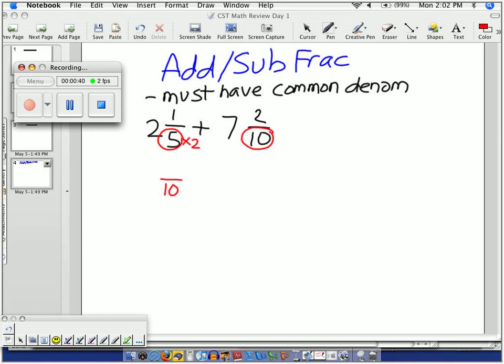But in order to do that, I multiply it by 2, same thing up top there. So this is now 2 and 2 tenths plus 7 and 2 tenths. Don't forget, whenever you change the bottom, you must also change the top. That's how we ended up with 2 tenths.